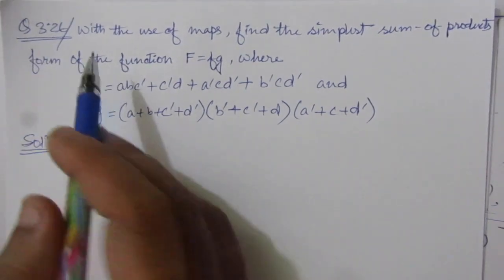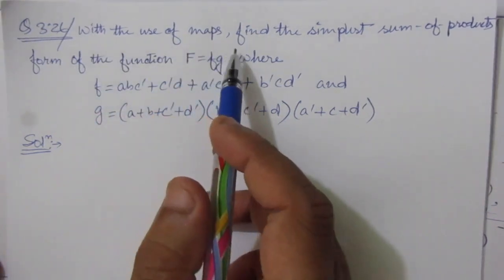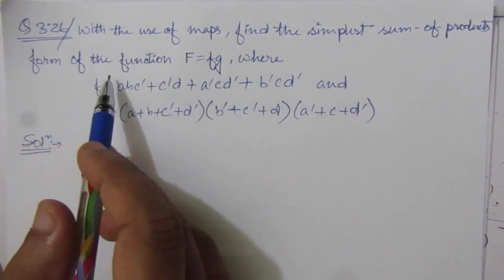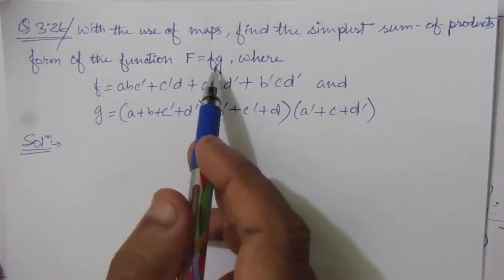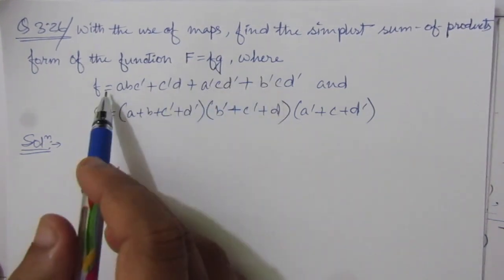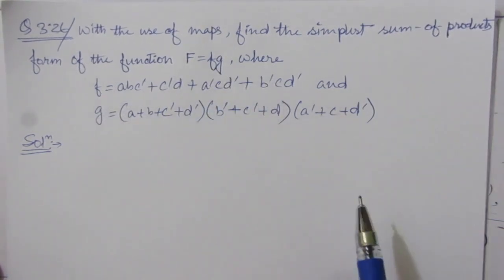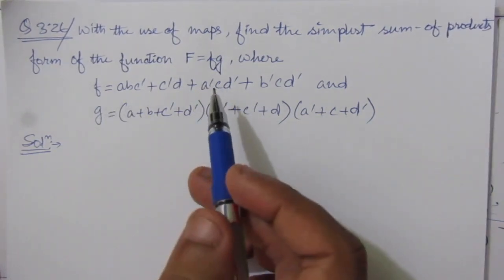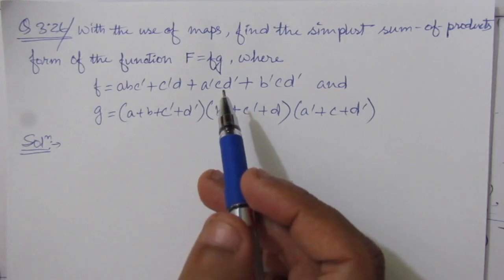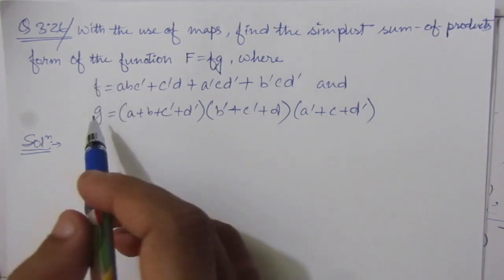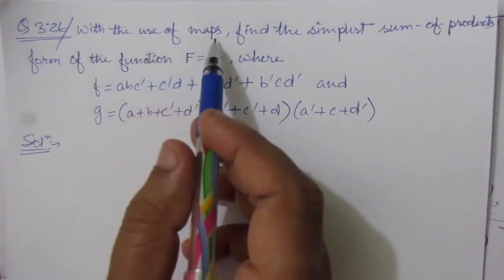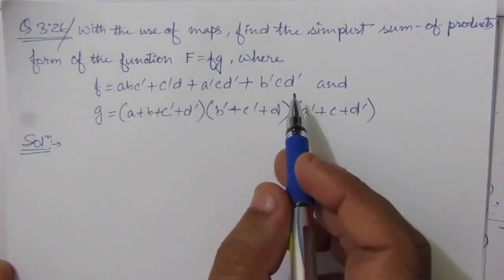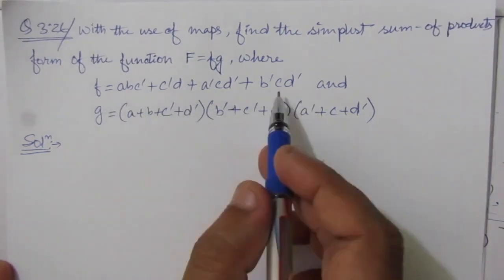The problem is: with the use of maps, find the simplest sum of product form of the function F = f · g, where f and g are two given functions. We have to find the simplest SOP form of the product of these two functions using K-maps. The first function f is already given in sum of minterms form.